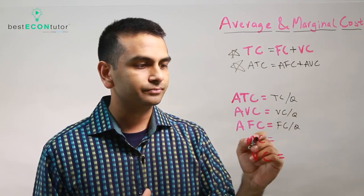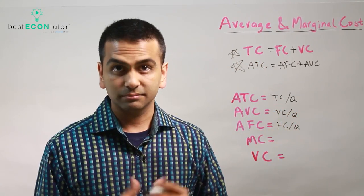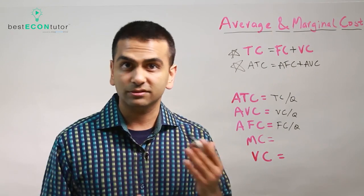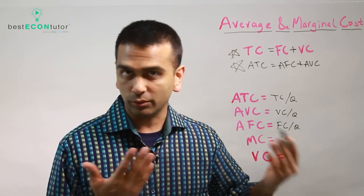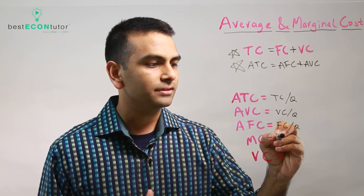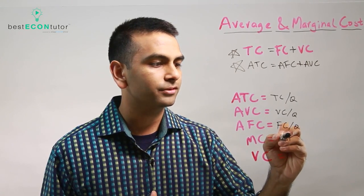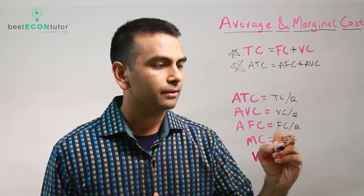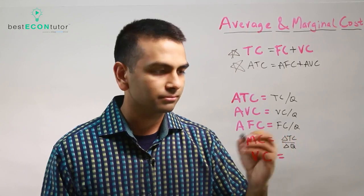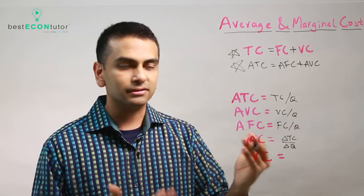Those are the average costs. Now, marginal cost. You kind of know that that's how much it's going to cost you to make one more fork, right? One more. So that's the change in total cost. How much your total cost changes by when you make one more. So that's change in total cost over change in quantity.